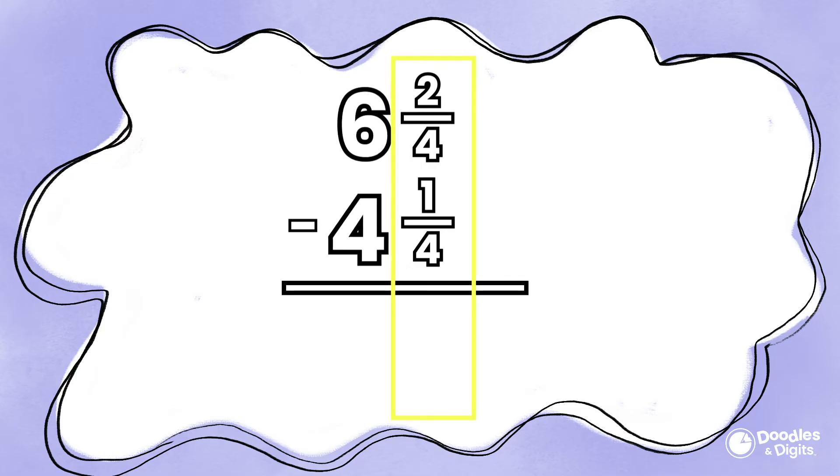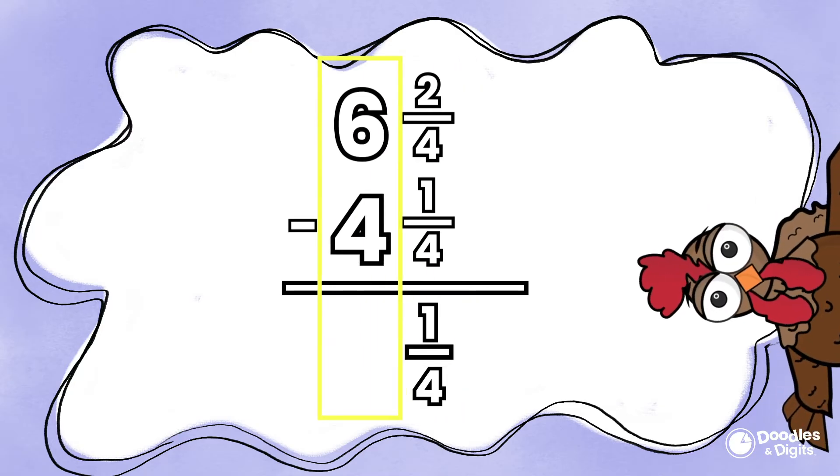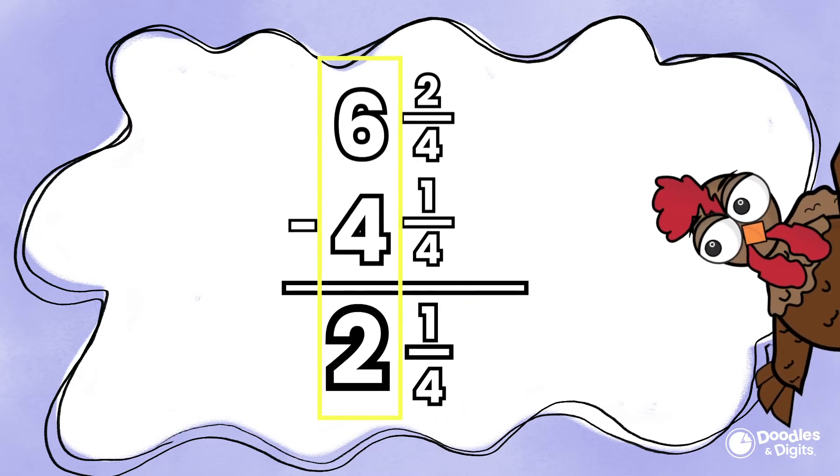I'm going to start with the fractions. Two-fourths minus one-fourth equals one-fourth. Now we move on to the wholes. Six minus four equals two. So our answer is two and one-fourth.